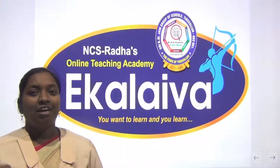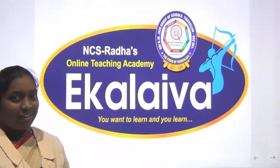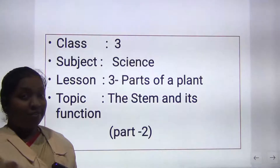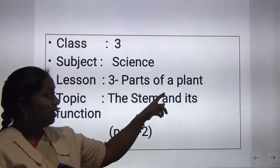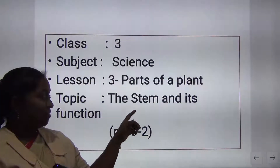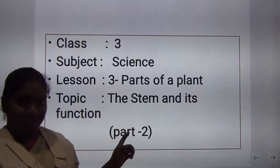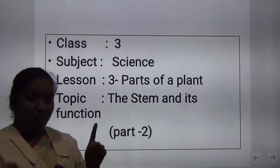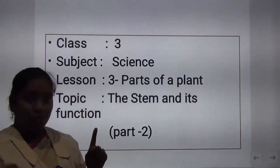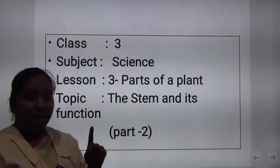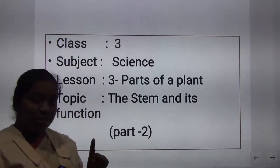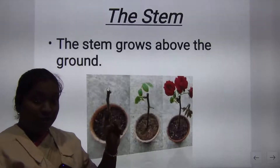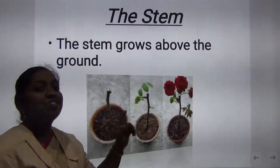Shri Kurubiya Namaha. Welcome children to our online teaching academy Ekaliva. We have already seen two lessons, and in the third lesson on parts of the plant, we are going to see the topic: the stem and its function. We already studied the parts of the plant — one is the shoot system and number two is the root system. In the shoot system, one of the parts we are going to see is the stem.